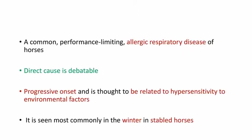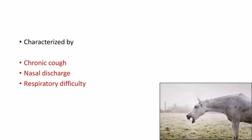This disease is a common performance-limiting allergic respiratory disease of horses. The direct cause is debatable; however, the progressive onset is thought to be related to hypersensitivity to environmental factors. It is seen most commonly in winter in stabled horses. The disease is characterized by chronic cough, nasal discharge, and respiratory difficulty.